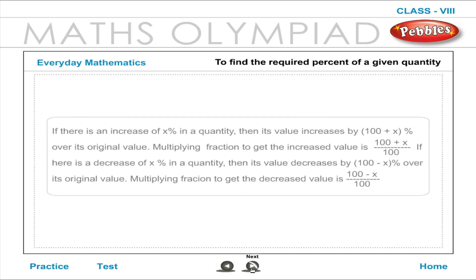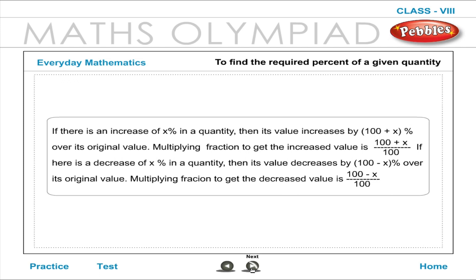To find the required percent of a given quantity: If there is an increase of x percent in a quantity, its value increases by 100 plus x percent over its original value. If there is a decrease of x percent in a quantity, its value decreases by 100 minus x percent over its original value. The multiplying fraction to get the decreased value is 100 minus x by 100.